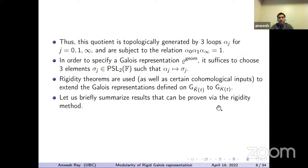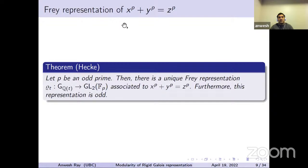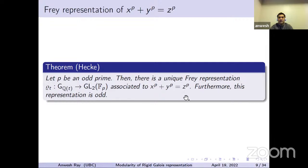Let us briefly summarize the results proven using this method. First, we start with the classical Frey representation associated to x^P + y^P = z^P — the classical Fermat equation. The result goes all the way back to Hecke. In this situation, the field K can be taken to be Q and the field F of characteristic P can be taken to be F_P (i.e., Z/pZ). There is a unique Frey representation up to equivalence associated to this equation.